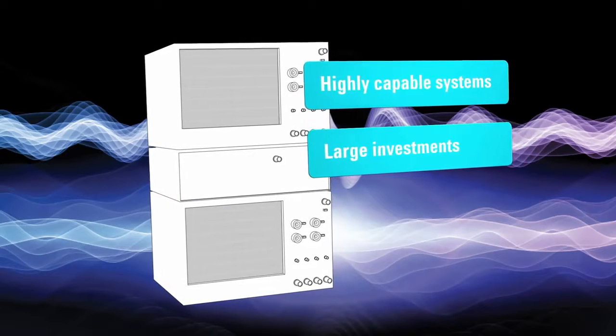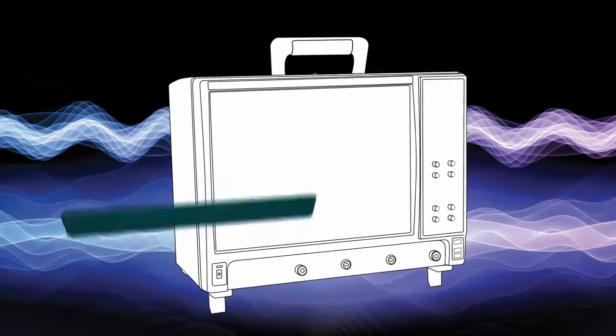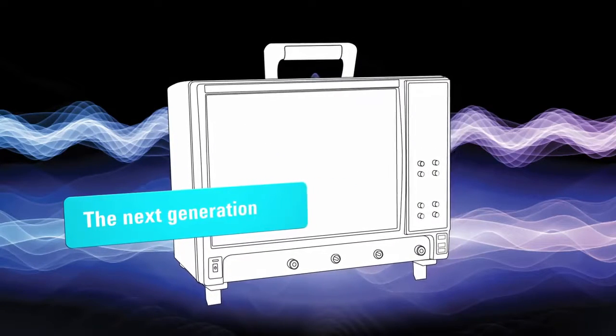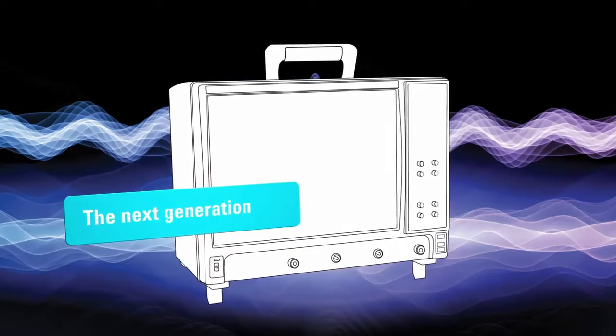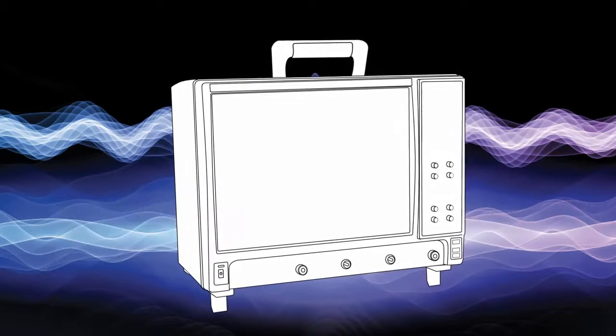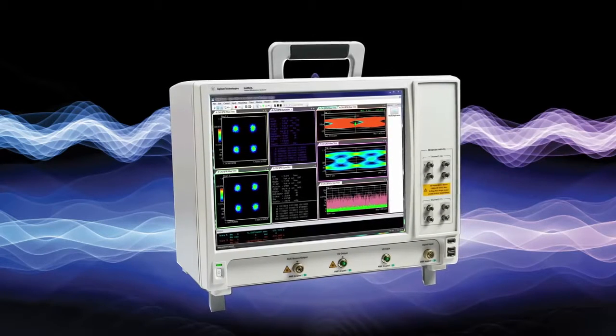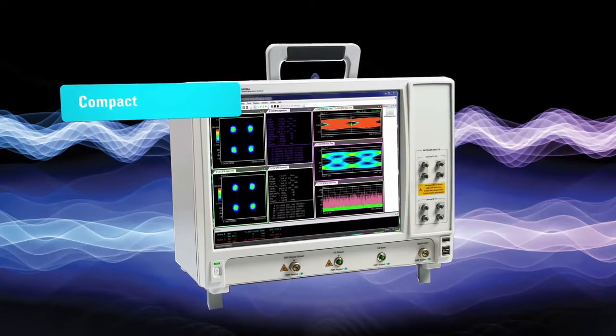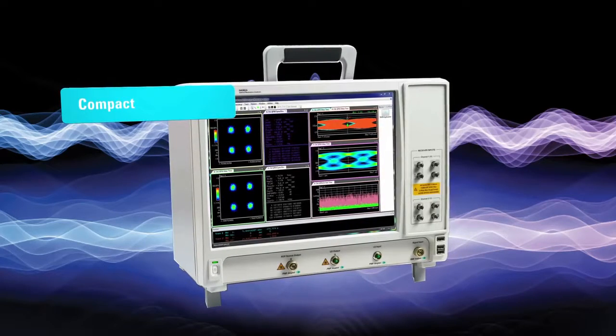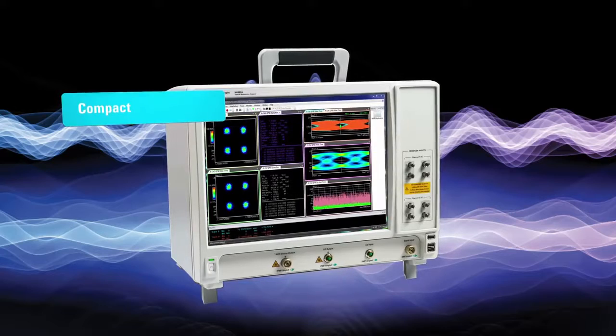The new N4392A optical modulation analyzer is the first of the next generation of 100 gig instruments. In the natural development towards fully integrated solutions, it is a truly compact optical modulation analyzer that tests 100 gigabit per second with 32 gigabit and more, and it does all this with real-time sampling, the only way to ensure robust phase tracking.